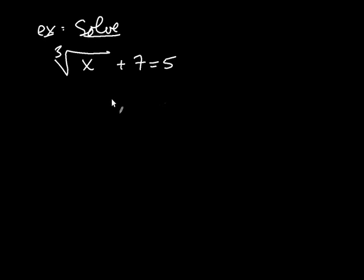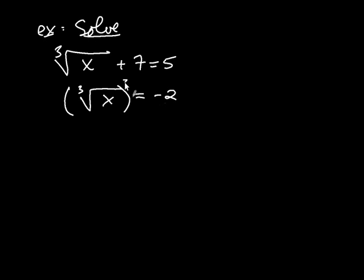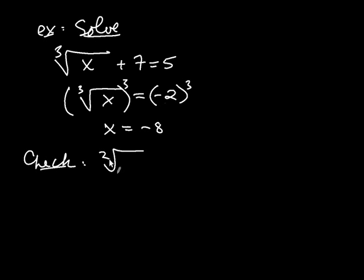Let's solve the cube root of x plus 7 equals 5. Again, first isolate the radical — subtract 7 from both sides to get the cube root of x equals negative 2. Now I'm going to cube both sides, because I'm trying to undo the cube root. Cubing gives x on the left and negative 8 on the right. Checking: the cube root of negative 8 plus 7 — the cube root of negative 8 is negative 2, and negative 2 plus 7 is 5. That is indeed equal to 5, so negative 8 truly is a solution.